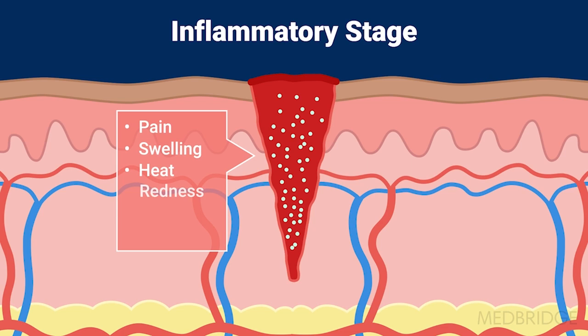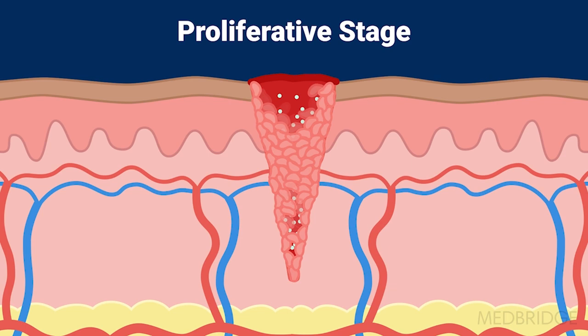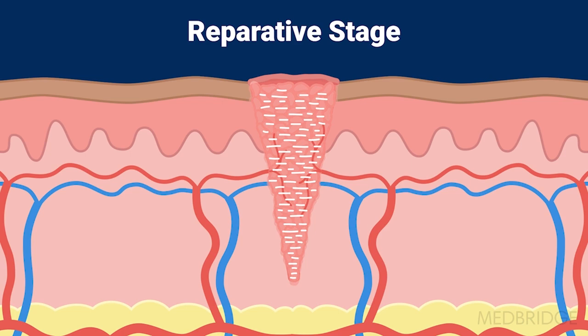In the proliferative phase, epithelialization occurs from the wound margin as new blood vessels grow, migration occurs, and collagen is synthesized. The reparative stage is characterized by remodeling as collagen is reorganized.